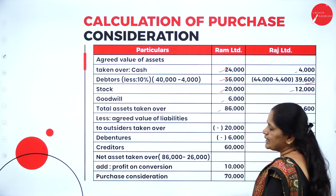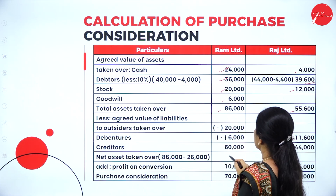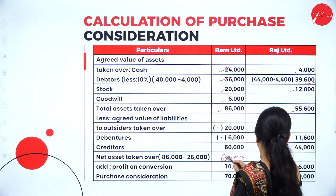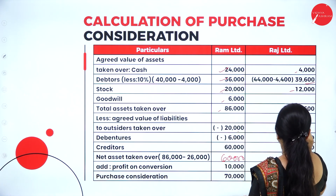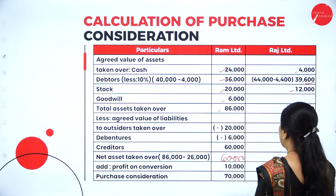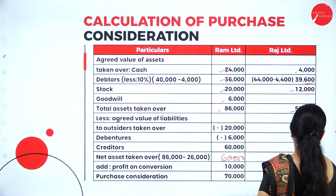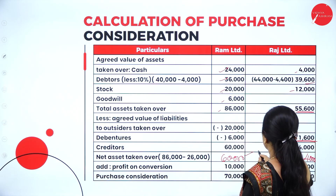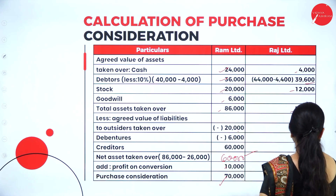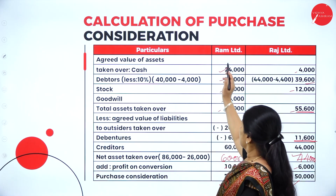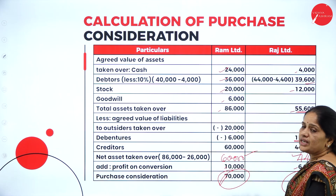We deduct the agreed value of liabilities from total assets to get net assets taken over. For Ram Limited: 86,000 minus 26,000 equals 60,000. For Raj Limited: 55,600 minus 11,600 equals 44,000. Then we add the profit on conversion — 10,000 for Ram Limited and 6,000 for Raj Limited — giving a total purchase consideration of 70,000 for Ram Limited and 50,000 for Raj Limited.